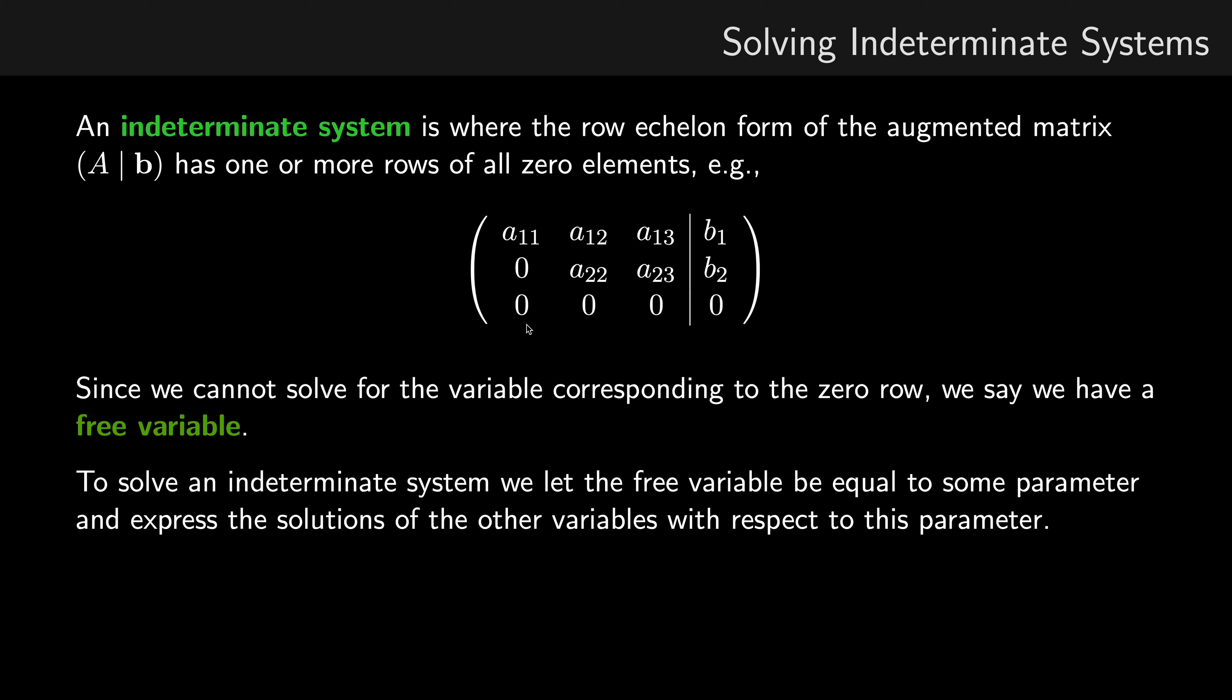Now if we were to try and solve this linear system using back substitution, we wouldn't know what this value of x3 would be because we've got no way of knowing, it's just all zeros in the bottom. So this means it's an indeterminate system. We can't calculate a unique single solution to the system. It has infinitely many solutions.